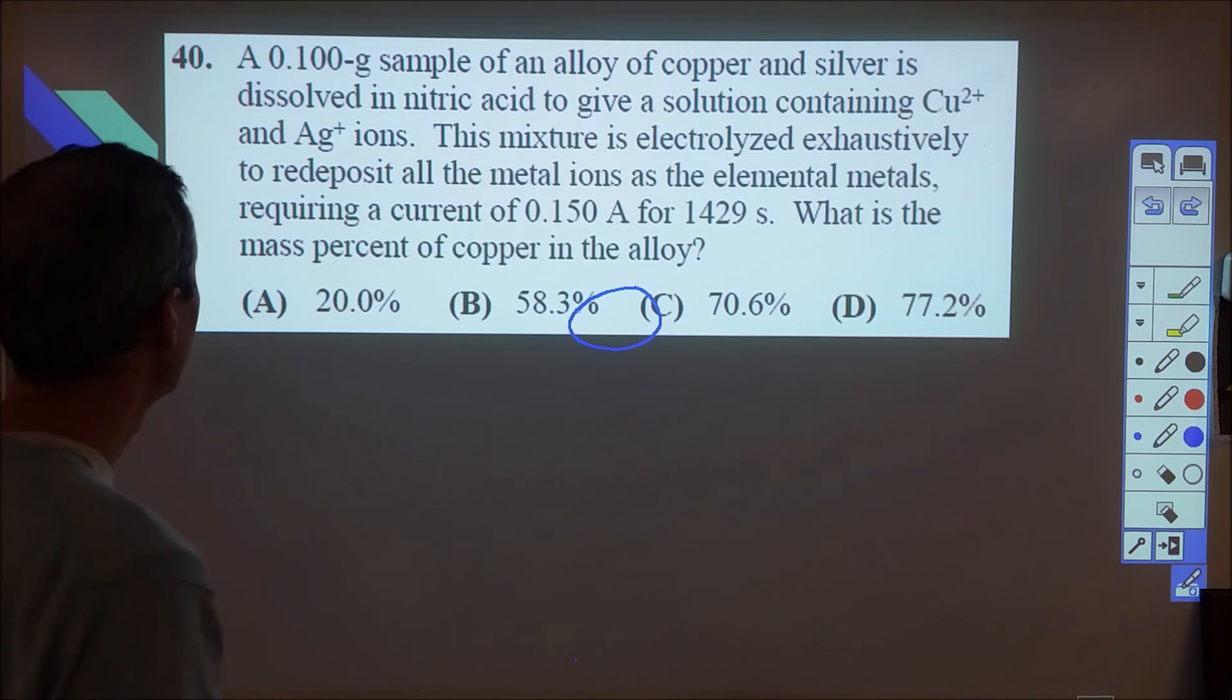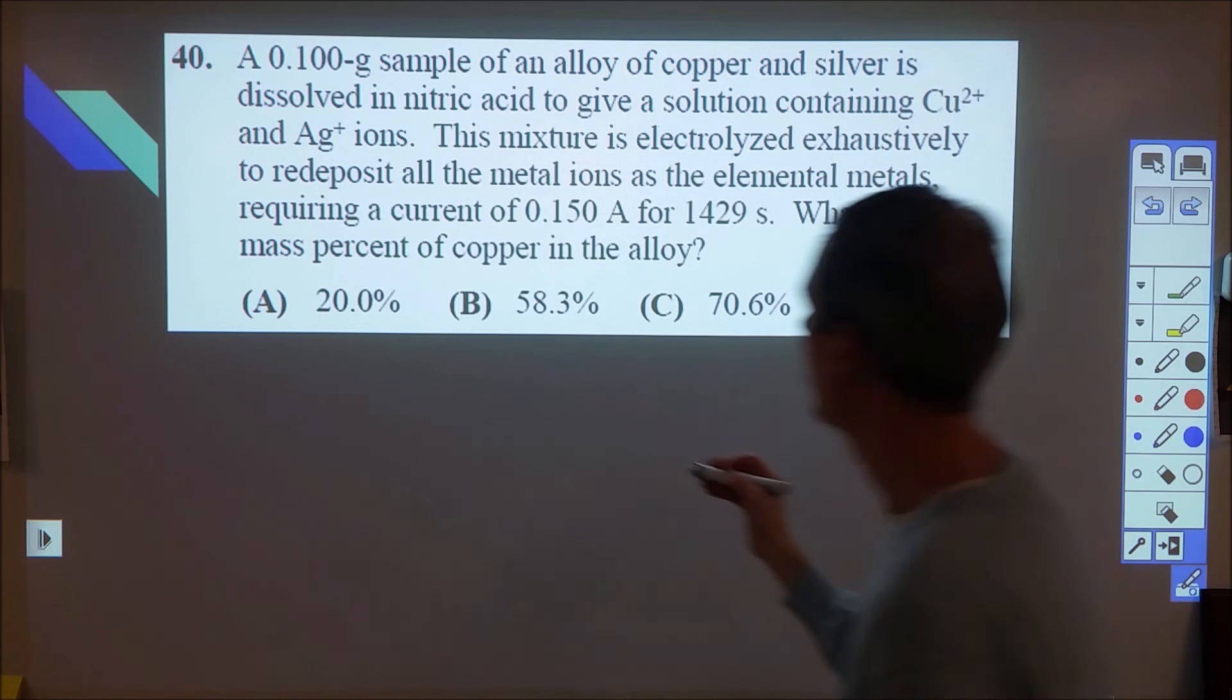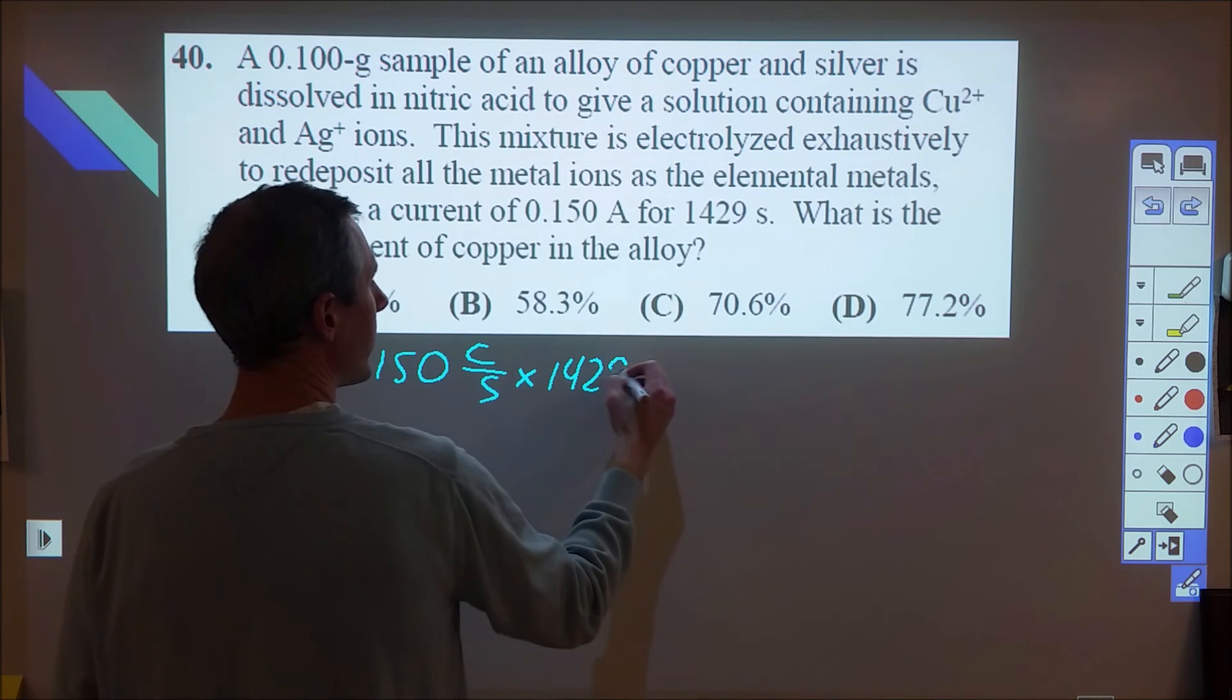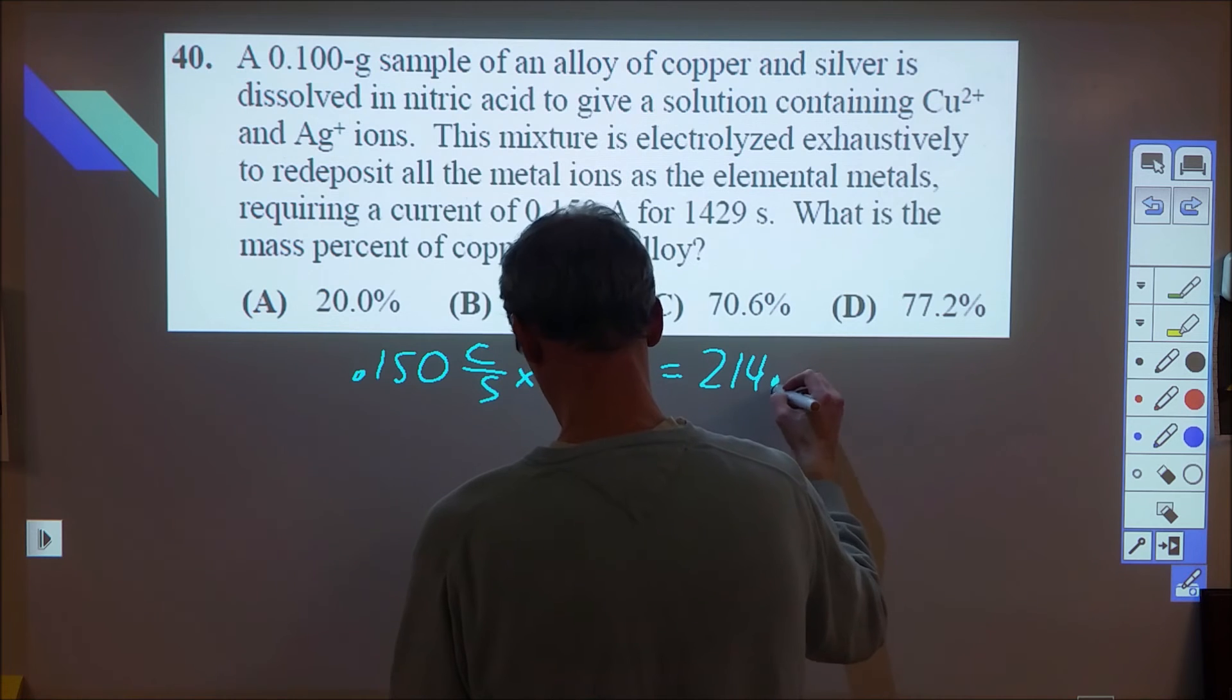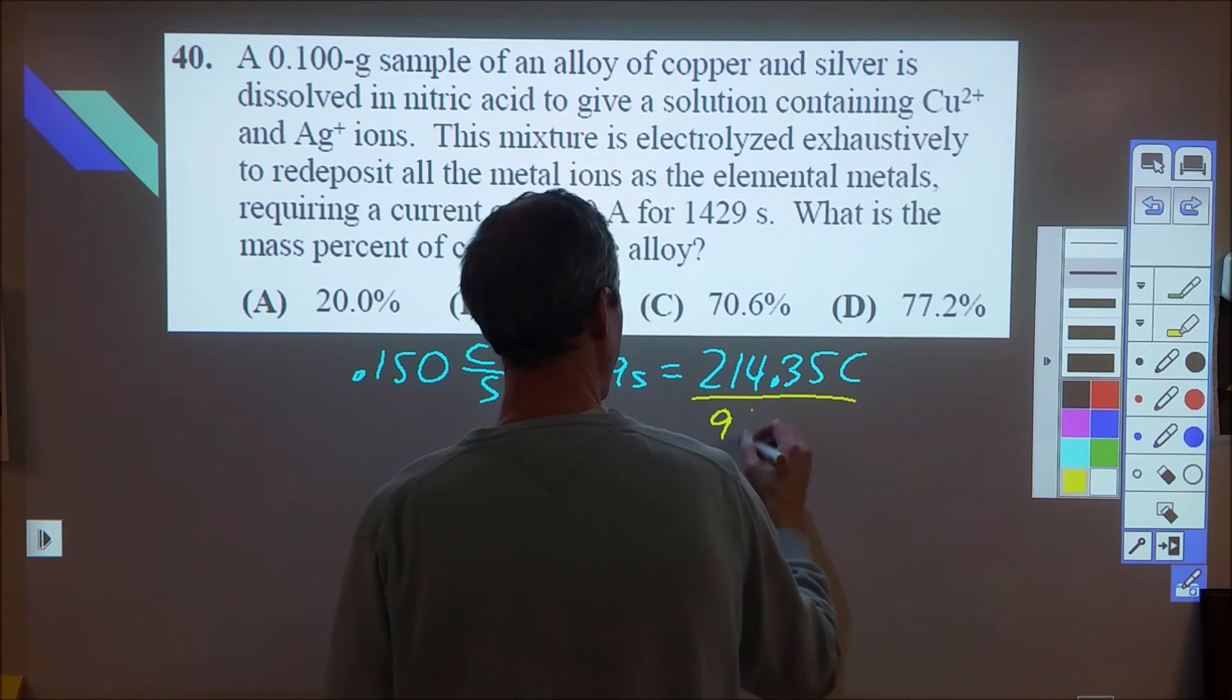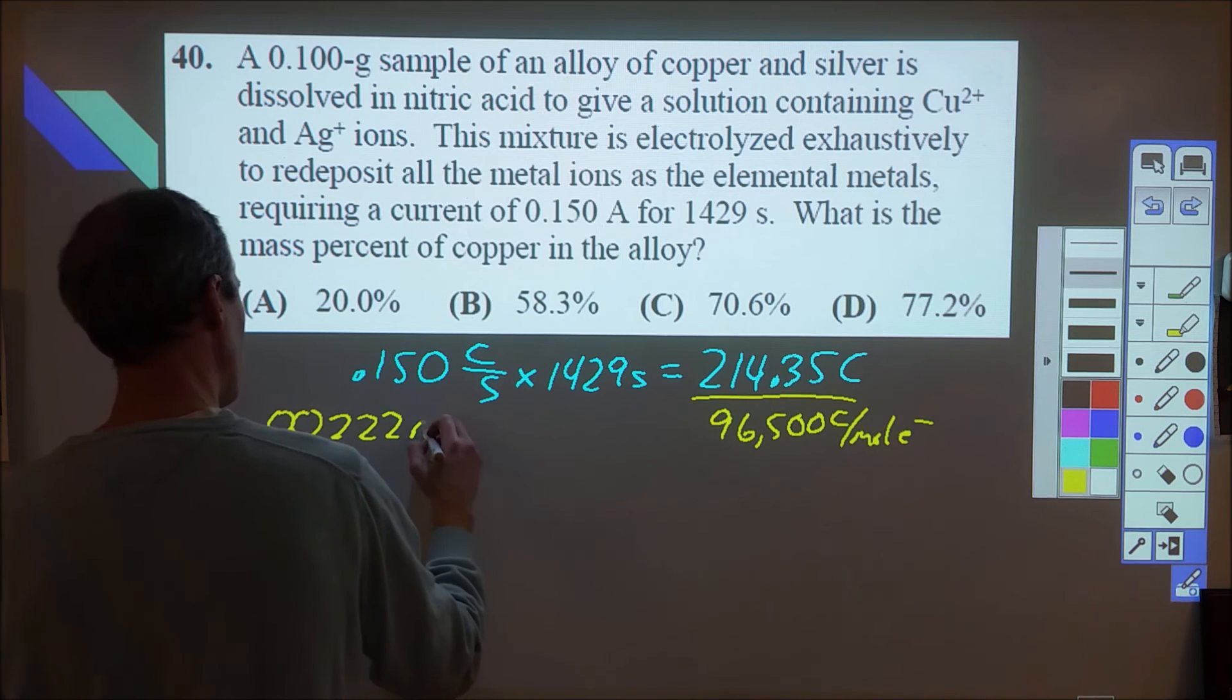Okay, and our last one for this set of lengthy hard questions is number 40. This one was particularly challenging. So this is a good one where I can give you some advice on how to approach this. So what I did for this was I started by figuring out how many moles of electrons do I have. So I know I have 0.150 coulombs per second times 1429 seconds. So amps is coulombs per second, so I can figure out my total charge. And that ended up being about 214 and change coulombs. And then what I did was I divided that by 96,500, which is how many coulombs there are per mole of electron, to get the number of moles of electrons. So that was 0.00222 moles of electrons.